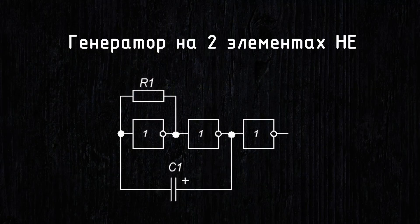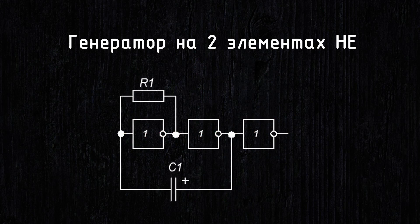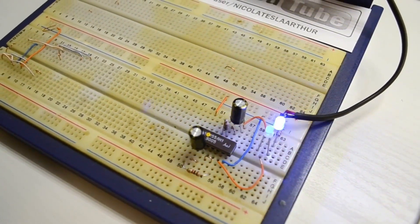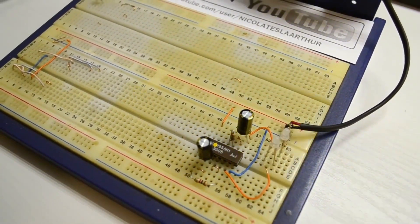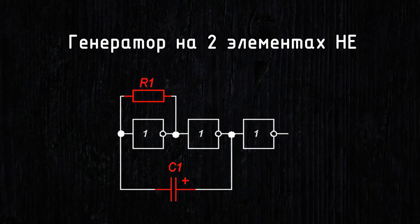There is another generator topology that requires only two elements and one additional buffer. However, it should be noted that this circuit is less stable compared to the previous one. The resistor should be chosen up to 500 ohms. Overall, this circuit may require separate tuning by selecting values for proper stable operation.